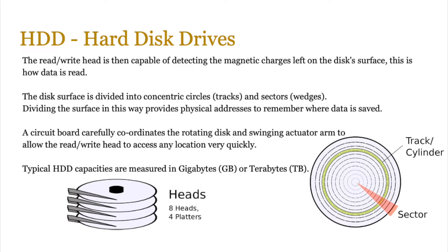You can see that example in the bottom right-hand corner — tracks running all the way around the disk, and a sector is just a slice of it. Dividing the surface this way provides physical addresses to remember where data has been saved rather than running randomly across each track. A circuit board carefully coordinates the rotating disk and the swinging actuator arm to allow the read and write heads to access any location very quickly. Typical hard disk drive capacities are measured in gigabytes or terabytes.